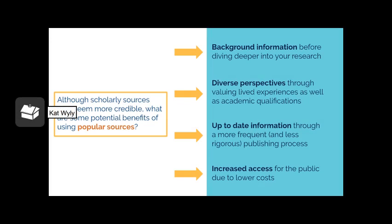There are quite a few reasons why there are so many popular sources out there. Popular sources provide background information that can help inform next steps in our research process. They also provide diverse perspectives that incorporate lived experiences instead of just academic qualifications. These sources are more frequently published and might provide current information due to the less rigorous publishing process. Finally, popular sources often cost less and may not require expensive database subscriptions, making it easier for the public to access them. Resources such as Google Scholar and other open education resources strive to provide free access to scholarly sources as well.